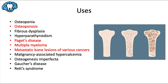So what are some uses for bisphosphonates? We have osteopenia, osteoporosis, fibrous dysplasia, hyperparathyroidism, Paget's disease, multiple myeloma, any metastatic bone lesions of various cancers, malignancy-associated hypercalcemia, osteogenesis imperfecta, Gaucher's disease, and Rett's syndrome, just to name a few.